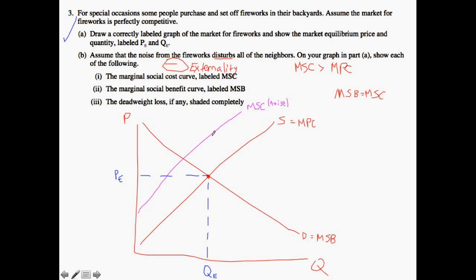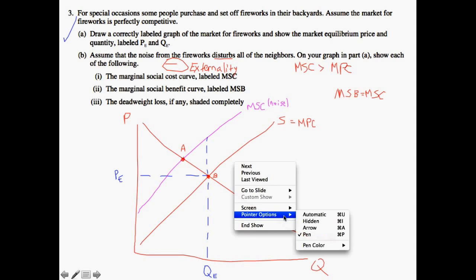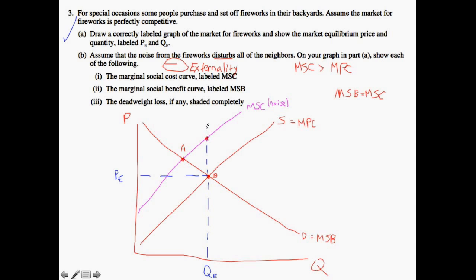We look at where marginal social cost intersects marginal social benefit — that happens at point A. The market equilibrium is at point B. Point C shows the vertical distance between the marginal social cost and the marginal private cost at the equilibrium quantity. This difference represents a loss incurred to society because of this negative externality — and that triangle between A, B, and C is your deadweight loss.